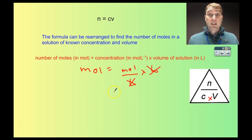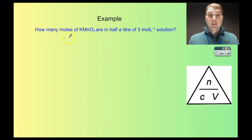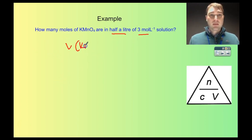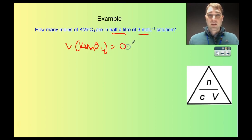Let's look at an example. How many moles of potassium permanganate are in half a litre of a 3 moles per litre solution? So we have half a litre and a concentration of 3 moles per litre. Writing down what I know: my volume of KMnO₄ solution is half a litre, and we convert that to a decimal — 0.5 litres.